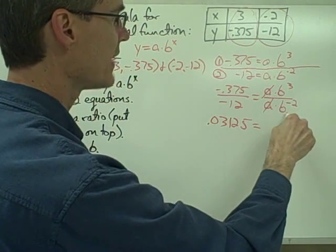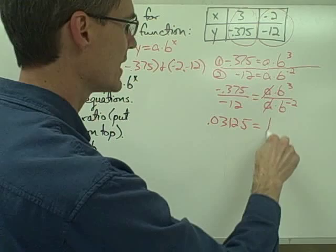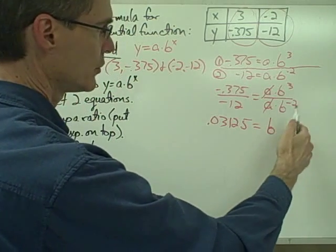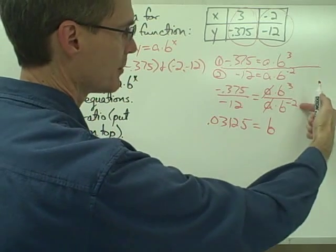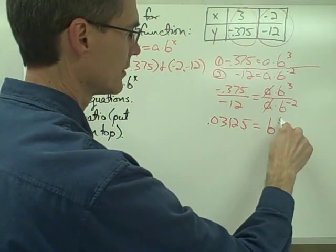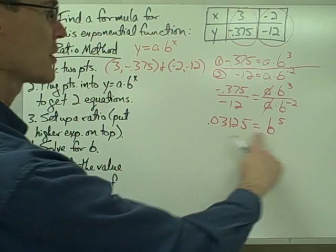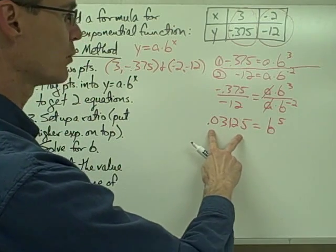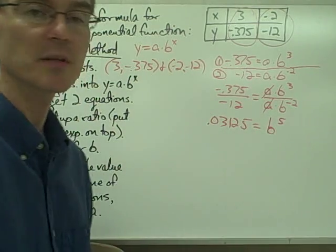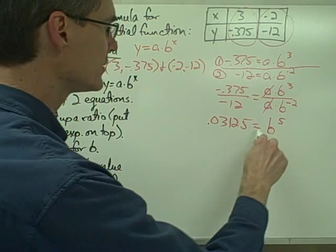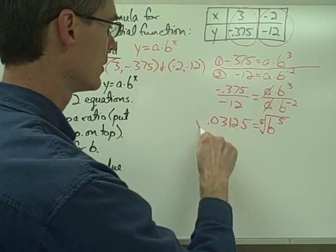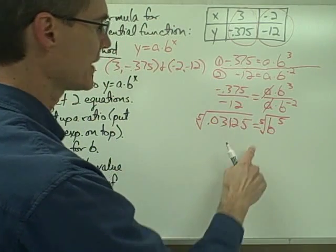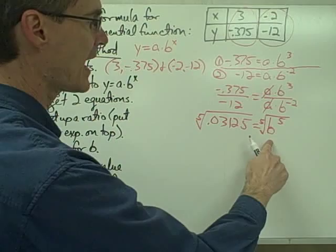b to the third divided by b to the negative 2, that's going to give me b to the power of 3 minus negative 2. 3 minus negative 2 is 5. So now I just have an equation here: 0.03125 equals b to the fifth power. And to solve this for b, I need to take the fifth root of both sides of my equation. If I take the fifth root of b to the fifth power, that's going to give me b.